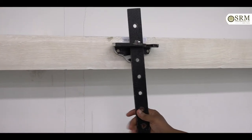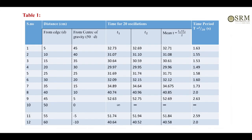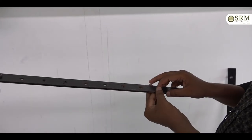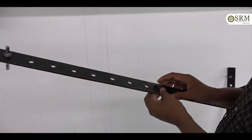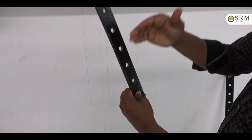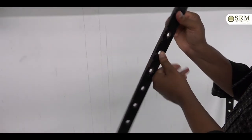In that way, we will take readings for 5, 10, 15, 20, 25, 30, 35, 40, and 45 centimeters — up to 45. For each length, find out time for 20 oscillations with Trial 1 and Trial 2, find out the mean, then find out the time period. When we come to 50 centimeters, this is the center of gravity — there is no reading for the center of gravity. So readings are taken from 5 to 45 in this direction. Then we will reverse the pendulum.